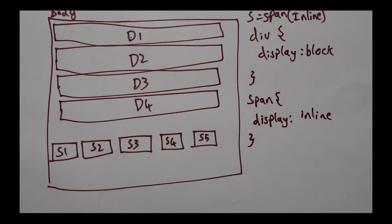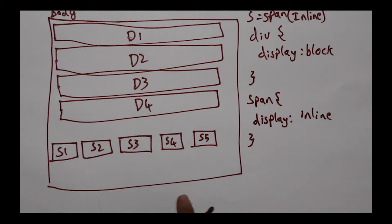Block properties occupy the entire space of the page and they start from a new line every time, whereas inline occupy only the required amount of space and do not start from a new line — they just flow with the available space. If you shrink the page, s5 or s4 would come down and flow like text. So if you change a div from display block to display inline, the divs would start appearing like span and vice versa.